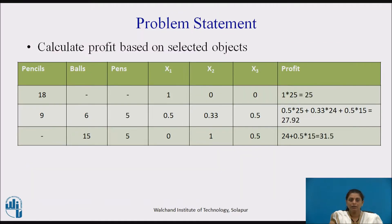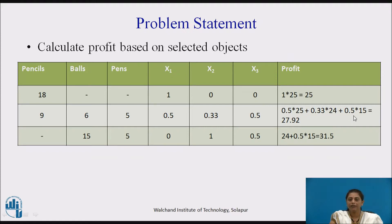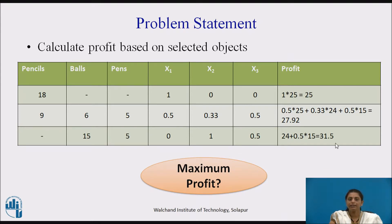Now let us calculate the profit for the feasible solutions. For the first solution, we took the first object completely, so profit is 1 into 25, which is 25. For the third solution, 0.5 of the first gives 12.5, plus 0.33 into 24, plus 0.5 into 15 — total profit is 27.92. For the fourth solution, the second object is taken completely for a profit of 24, and half the third gives 0.5 into 15. Total profit is 31.5. The maximum profit obtained is 31.5.